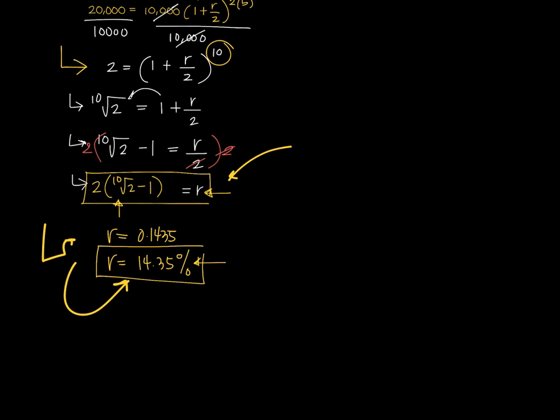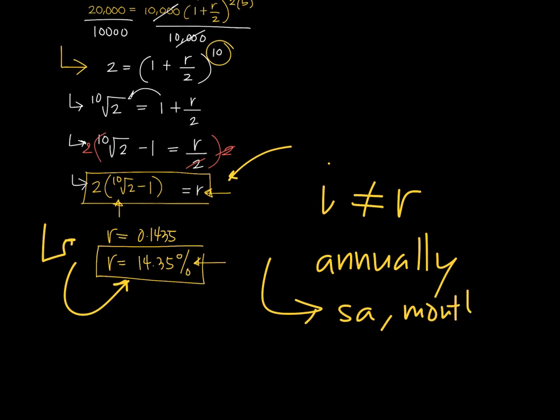Final note: I would like to emphasize that i is not necessarily the R. They can only be the same when the interest is compounded annually. If it becomes semi-annually, monthly, or daily, then you have to use i equals R over N.